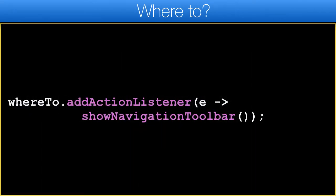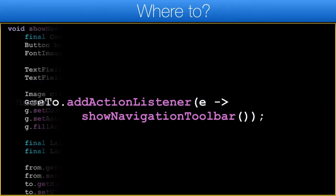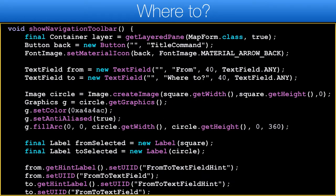We could build something like this with a dialog or interaction dialog, but I chose to go with simpler container instances on top of the map. To do this, I first had to add a listener to the 'where to' button, then I add the showNavigationButton method.